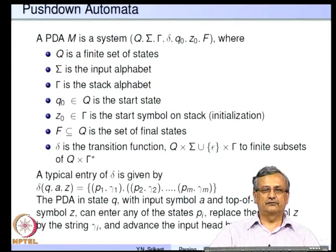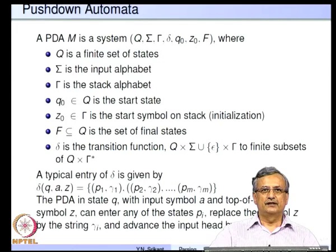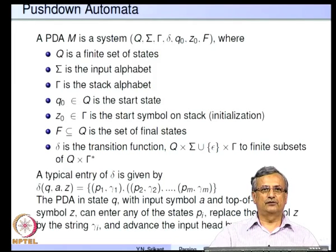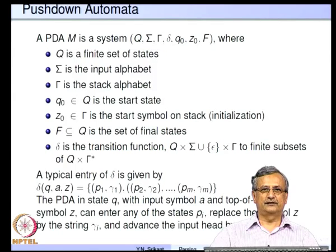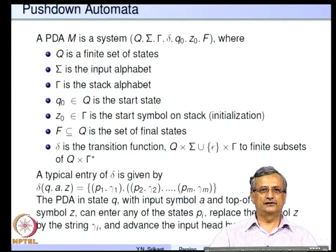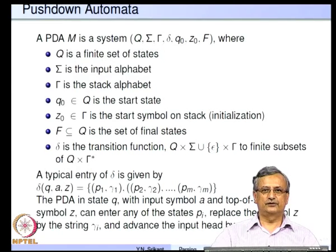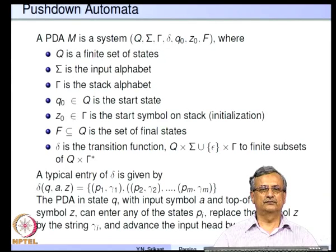To do a quick recap: a pushdown automaton M has a finite set of states Q, an input alphabet sigma, a stack alphabet gamma, a start state Q-naught, a start stack symbol Z-naught, a set of final states F which is a subset of Q, and a transition function which shows how the automaton behaves.